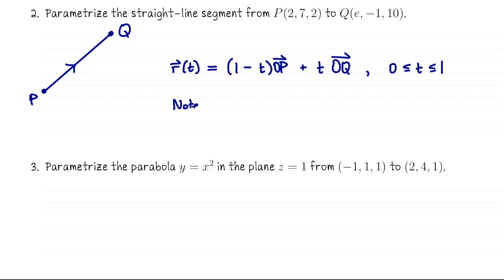And then you can check that the velocity vector r prime of t. If I go through and I differentiate, that's just going to be oq minus op. Or in other words, it's the vector from p to q. So this confirms that this parametrization starts at p, travels along this direction vector, we have a constant velocity vector pointing us in this way, until we arrive at q.